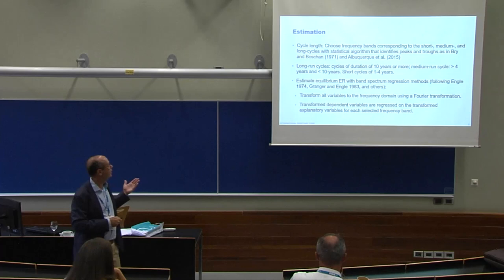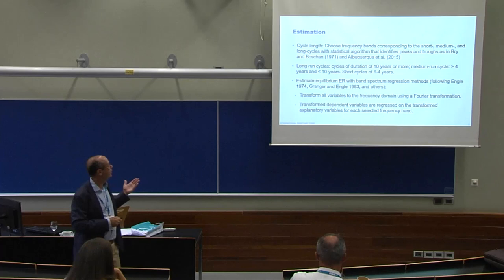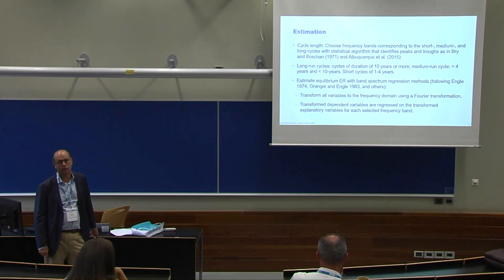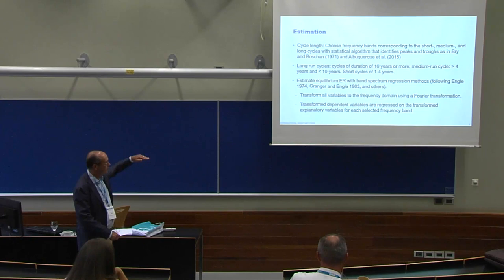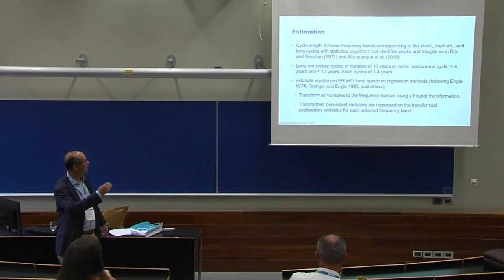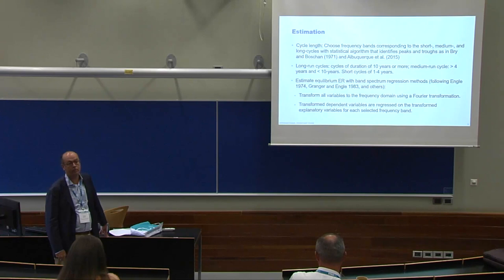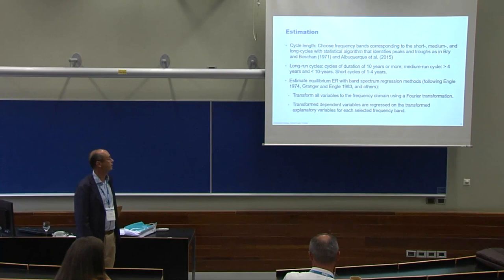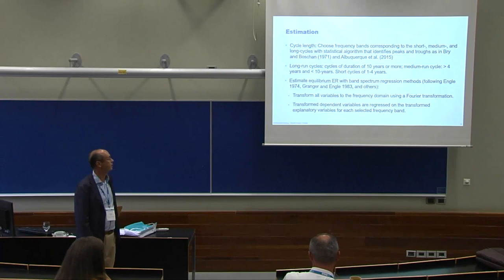To choose these cycle lengths, we use a statistical algorithm based on the well-known work of Brian Boschan and subsequently Albuquerque and others, using a simple technique to look at turning points. We find that long-term cycles are those of more than 10 years in duration, medium-term cycles are four or more years, and short-term cycles are one to four years.